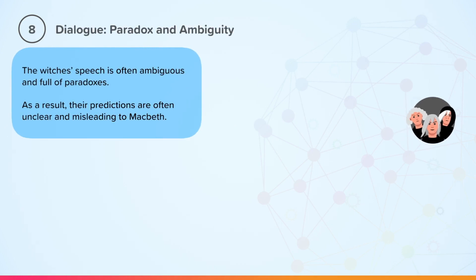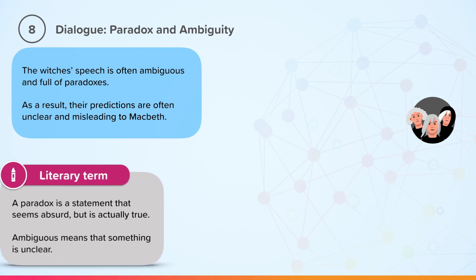The witches' speech is often ambiguous and full of paradoxes. As a result, their predictions are often unclear and misleading to Macbeth. A paradox is a statement that seems absurd when you first hear it, but is actually usually true. And if something is ambiguous, that means it is unclear.